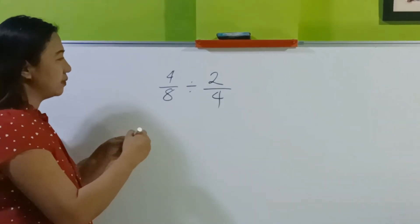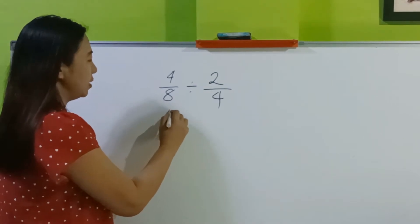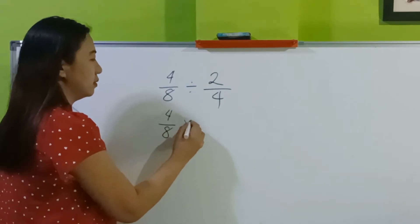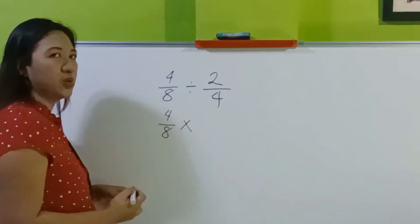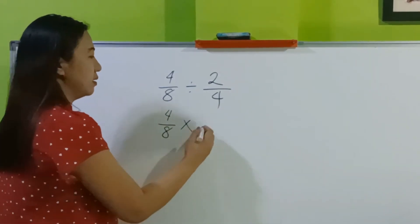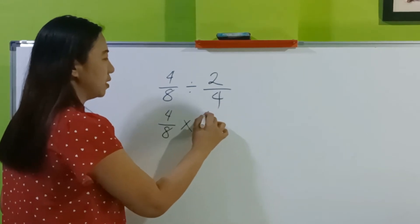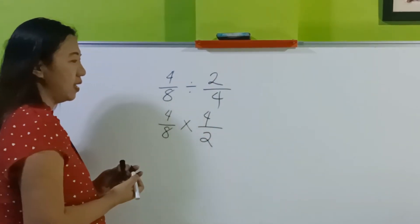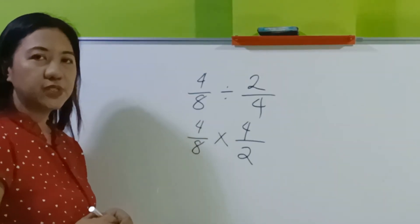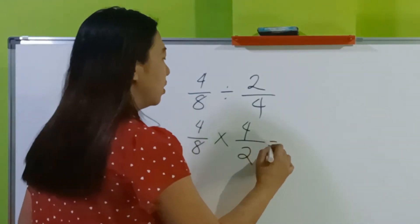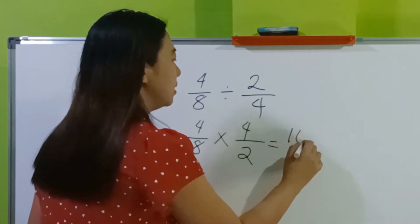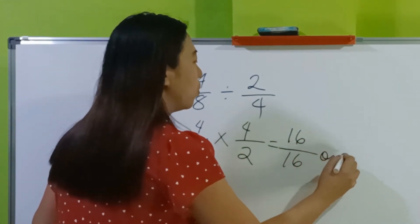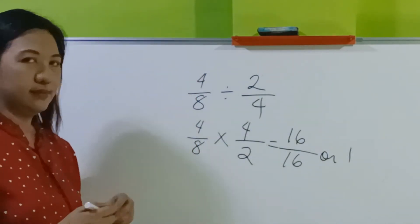Let's start with the long cut. Copy the dividend, 4 over 8. This becomes multiplication, and then find the reciprocal — just flip it. This becomes the numerator and this becomes the denominator. Next, follow the steps in multiplying fractions. 4 times 4 is 16, 8 times 2 is 16, which equals 1.